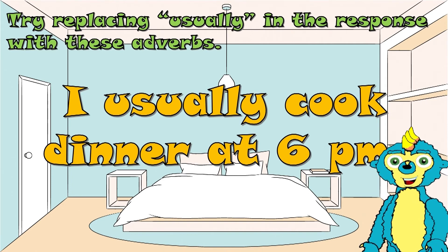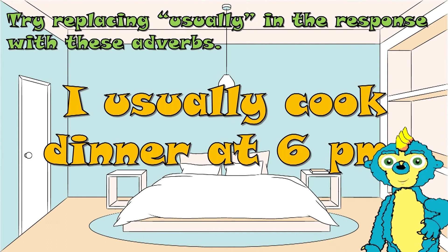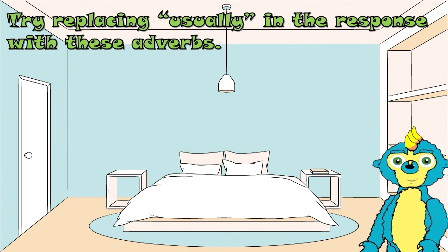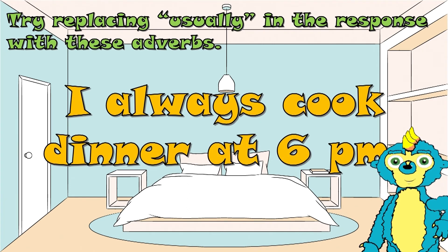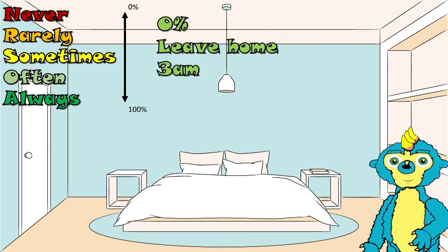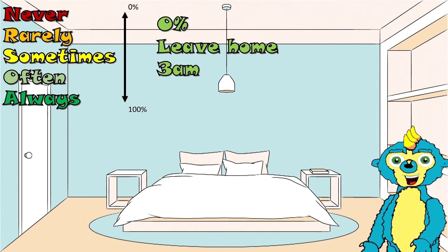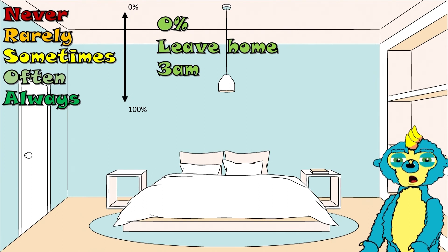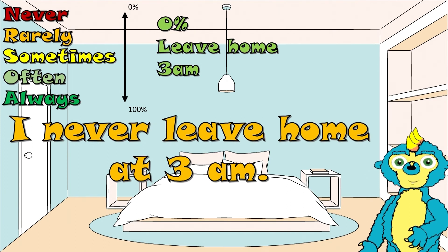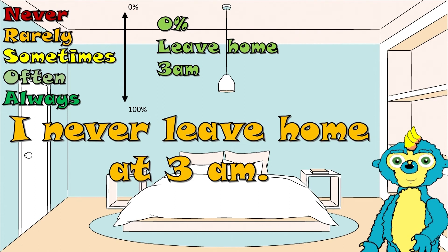Did you use SOMETIMES? ALWAYS? NEVER? I always cook dinner at 6pm. Good job! Help me answer these questions. There's zero percent chance we are leaving home at 3am. How would we answer? I NEVER leave home at 3am. If you got this, well done! Let's try another!